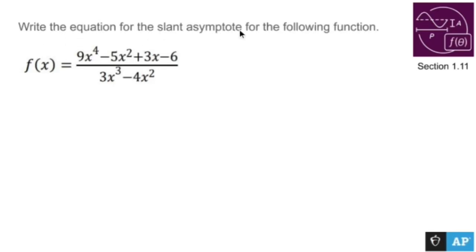Write the equation for the slant asymptote for the following function. In order for you to know that you have a slant asymptote, one thing needs to happen. The degree in the numerator has to be one higher than the degree in the denominator. Does that happen here? Yes, it does.